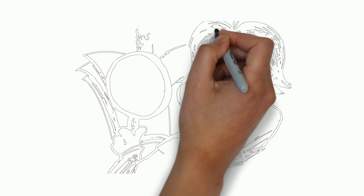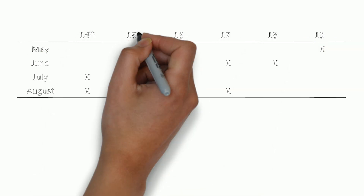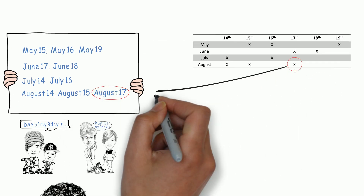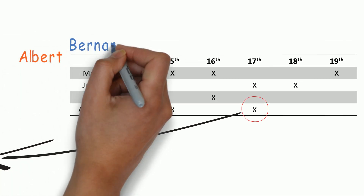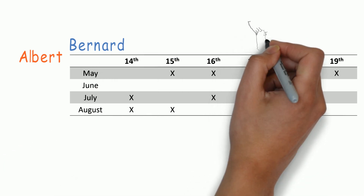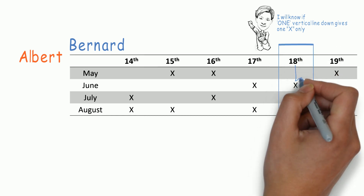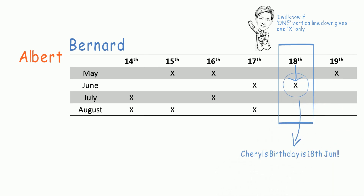Let's investigate with the help of Detective Gecko. First, let's create a matrix with months as rows and days as columns. The 10 dates given by Cheryl are marked with crosses. Since Albert knows the month, we write his name on the left, and Bernard's name at the top since he knows the days. For example, if Cheryl tells Bernard the 18th,